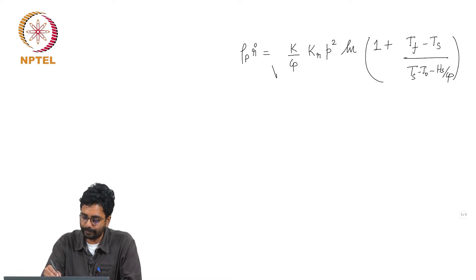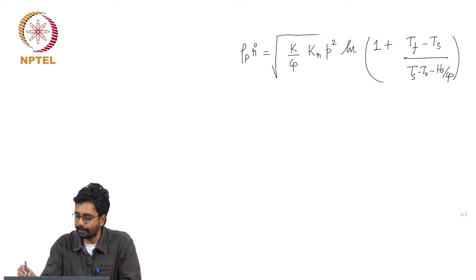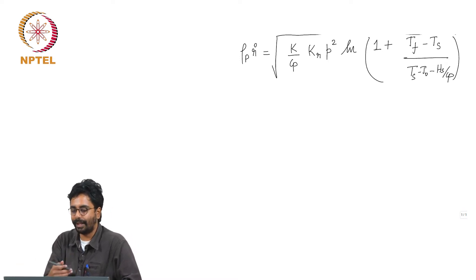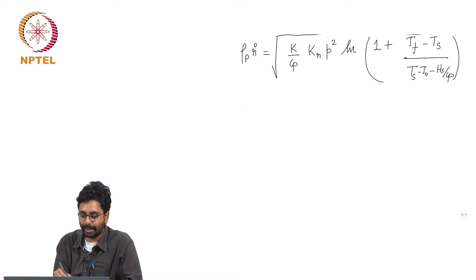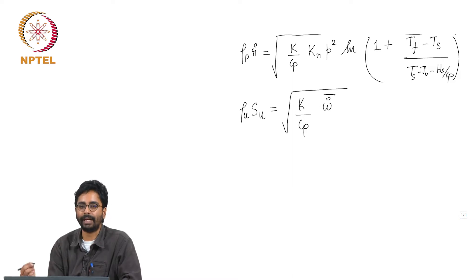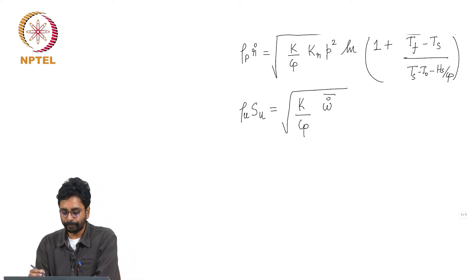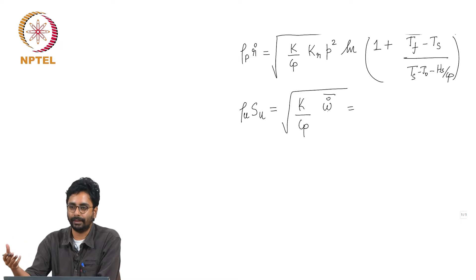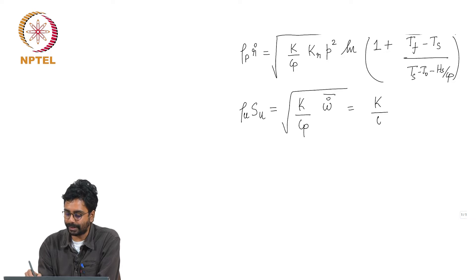Before we go to parameter estimation, I want you to recognize the similarity between these two equations. This is what we had yesterday — all that has happened is that if I assume omega_dot to be a constant multiplied by pressure squared, which is what it will be for a bimolecular reaction, these two expressions are exactly the same.